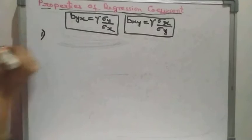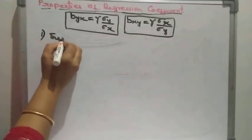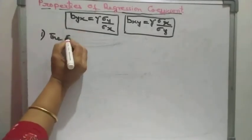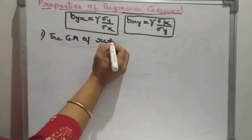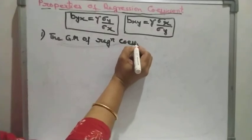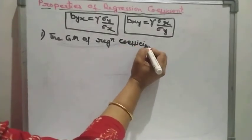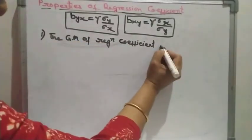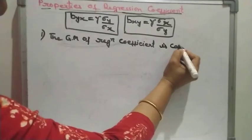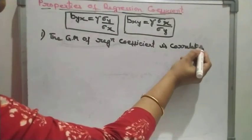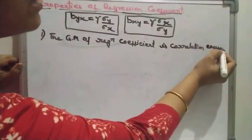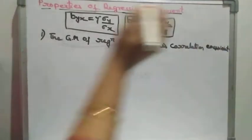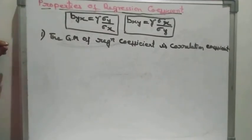Now let's start with the first property. Property number one: the geometric mean (GM) of the two regression coefficients is the correlation coefficient r.